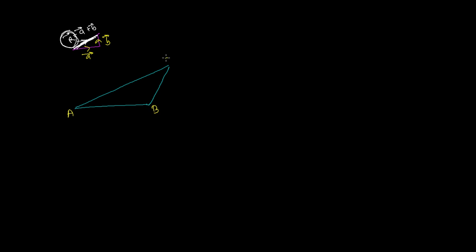To derive the magnitude and direction of R, let me first make a triangle with vertices A, B, and C. According to the triangle law, side AB represents vector P, side BC represents vector Q, and the third side AC taken in reverse order represents the resultant of P and Q in magnitude and direction. We need to find the magnitude as well as the direction of this resultant R.